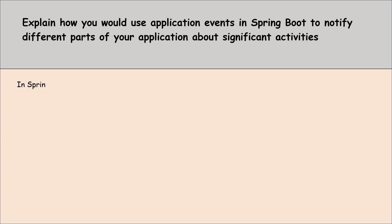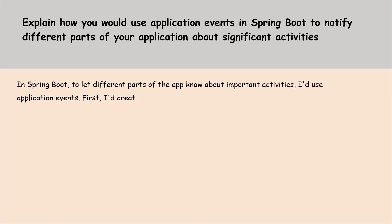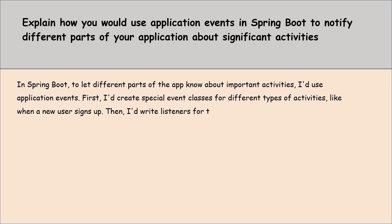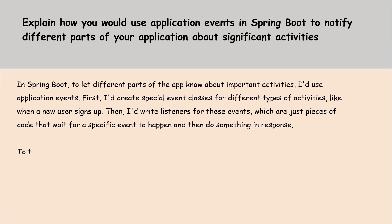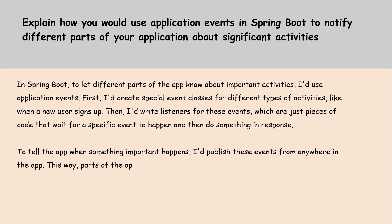Moving to the next question: explain how you would use application events in Spring Boot to notify different parts of your application about significant activities. In Spring Boot, to let different parts of the app know about important activities I would use application events. First I would create special event classes for different types of activities, like when a new user signs up. Then I would write listeners for these events — pieces of code that wait for a specific event to happen and do something in response. To trigger them I would publish these events from anywhere in the app, allowing parts of the app to communicate without being directly connected, keeping the code clean and organized.